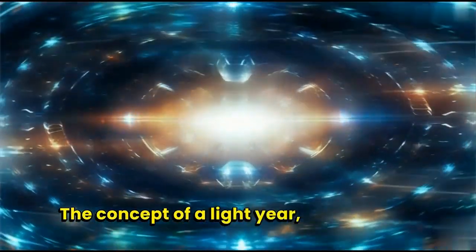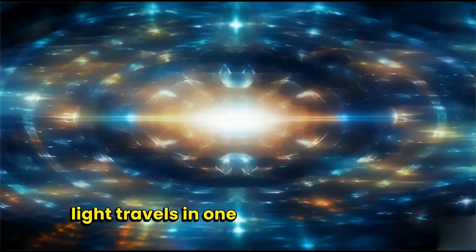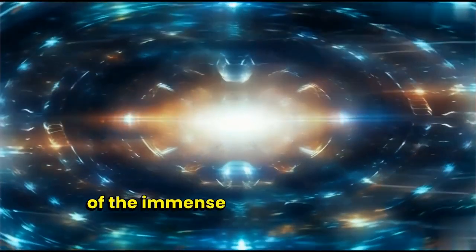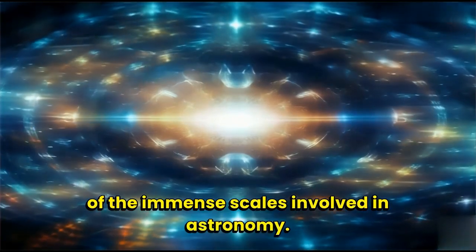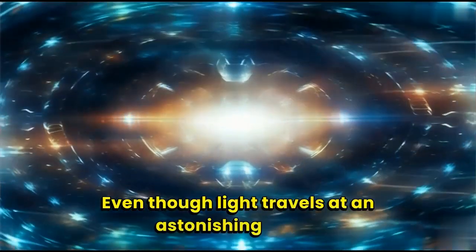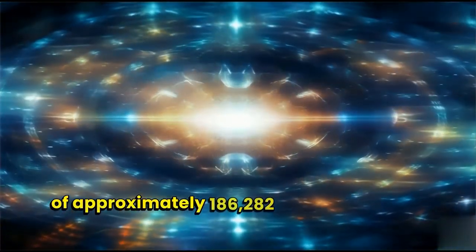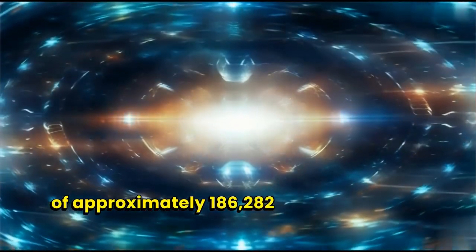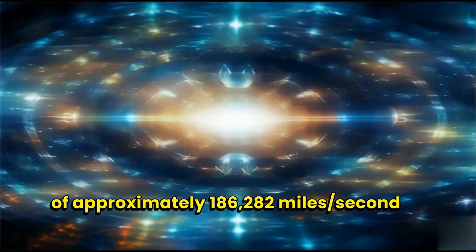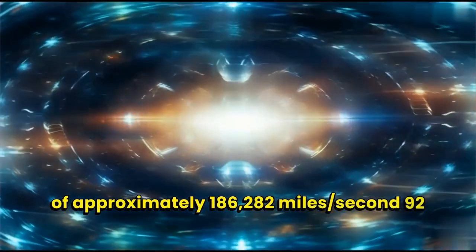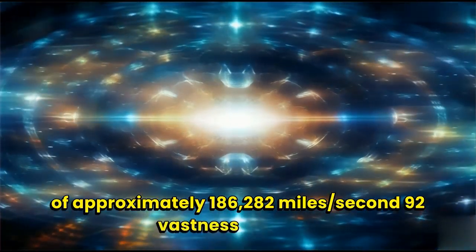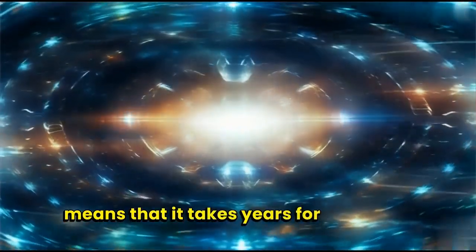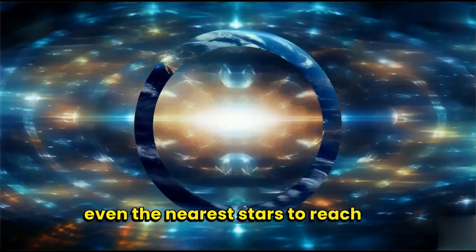The concept of a light year, the distance light travels in one year, gives a sense of the immense scales involved in astronomy. Even though light travels at an astonishing speed of approximately 186,282 miles per second (299,792 kilometers per second), the vastness of space means that it takes years for light from even the nearest stars to reach us.